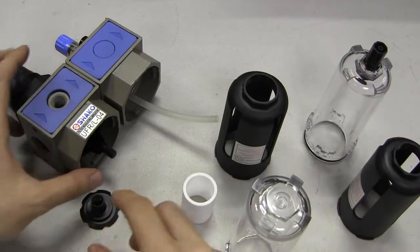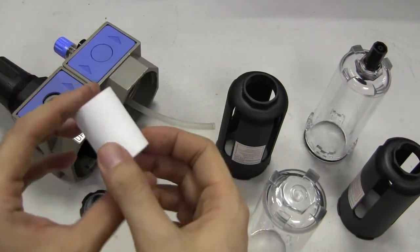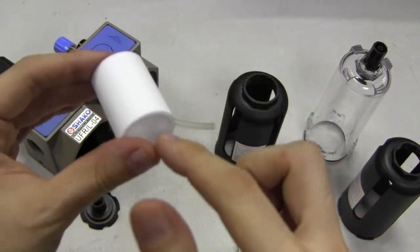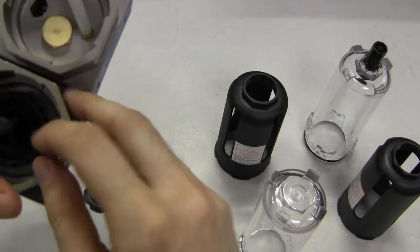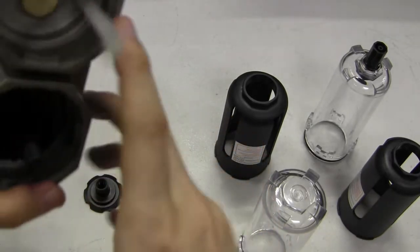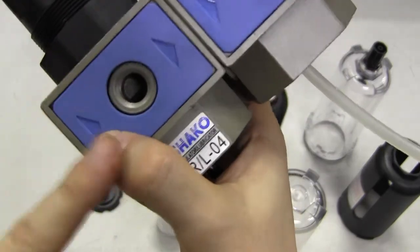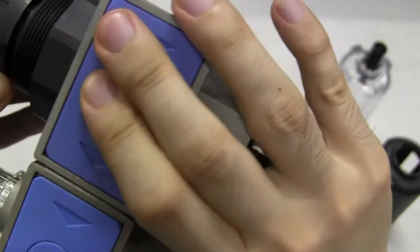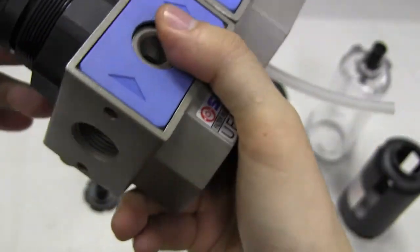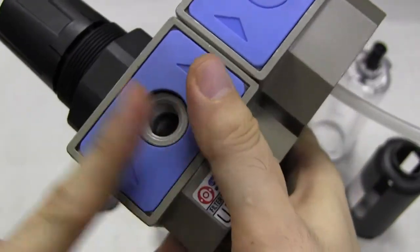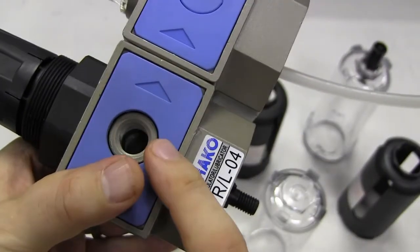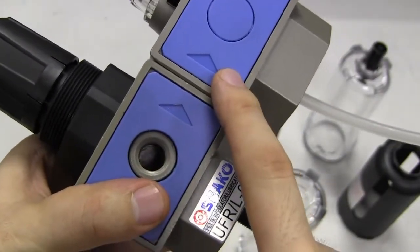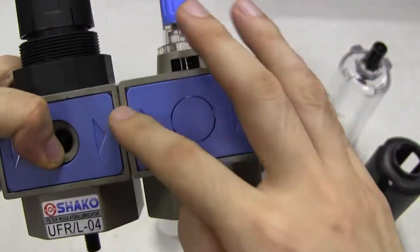The air will go into the filter, so the clean air will be coming out here and it's gonna go in here to the regulator. There's an exhaust port here somewhere. It's going to regulate the air. The air going in here, it's going to be set, if you set it at 70 psi, then 70 psi will be going in here. We have here the lubricator part.